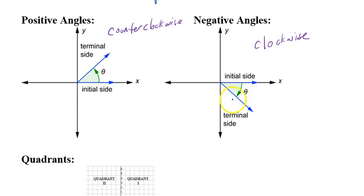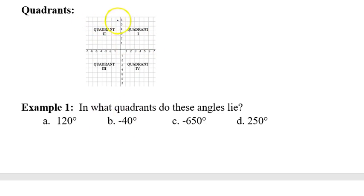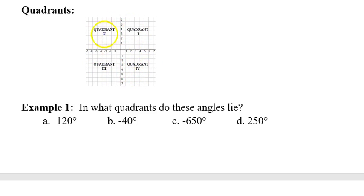Before we get to the examples, let me remind you about the quadrants. Quadrant one is the upper right, quadrant two is the upper left, quadrant three is the lower left, and quadrant four is the lower right. These follow the direction of positive angles — counterclockwise — in their naming, so it matches with the positive direction.